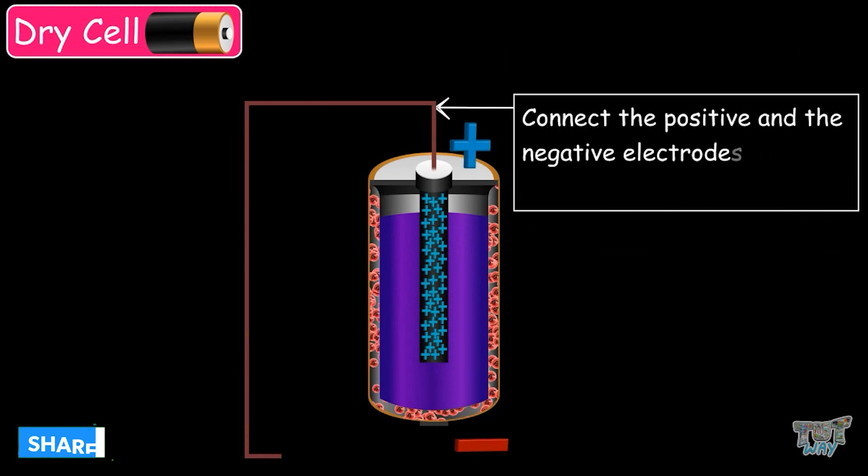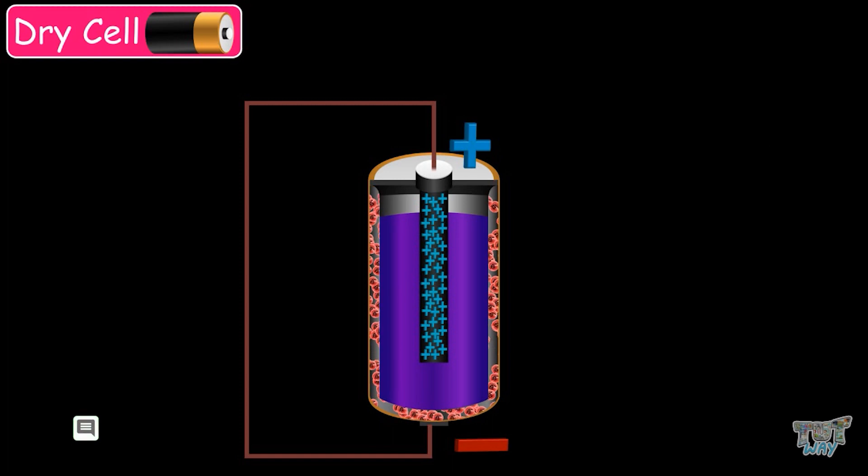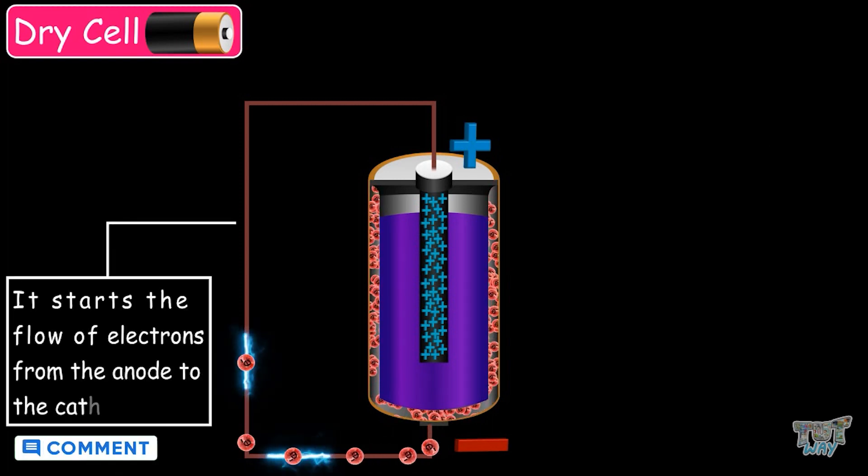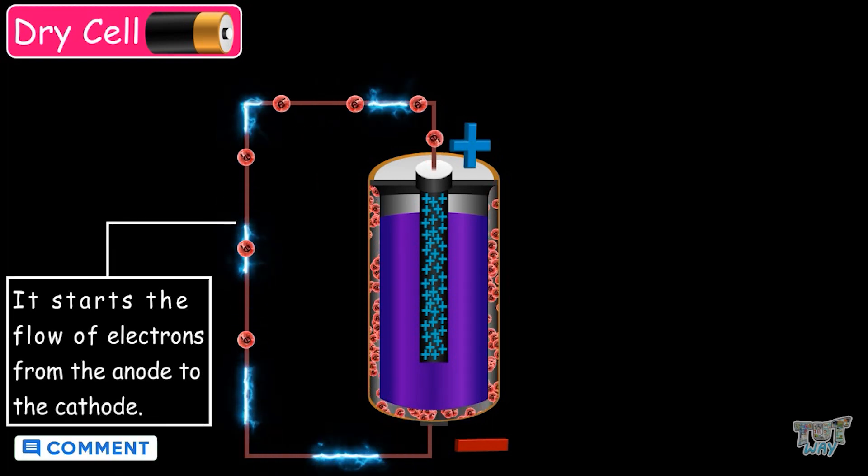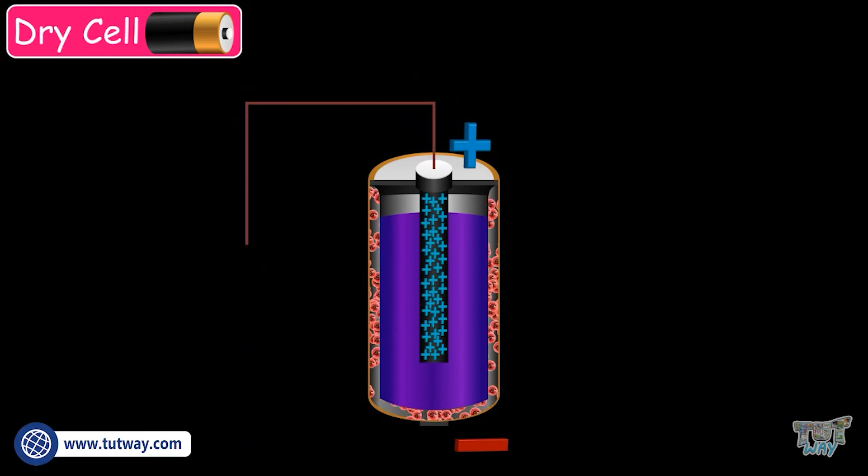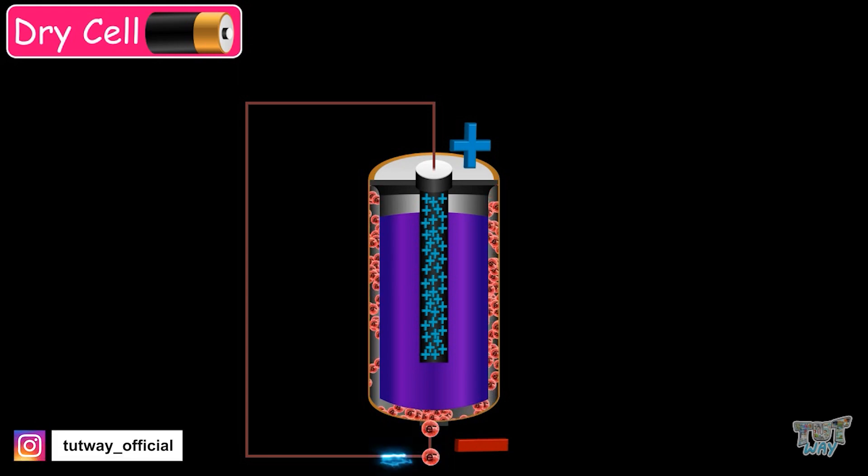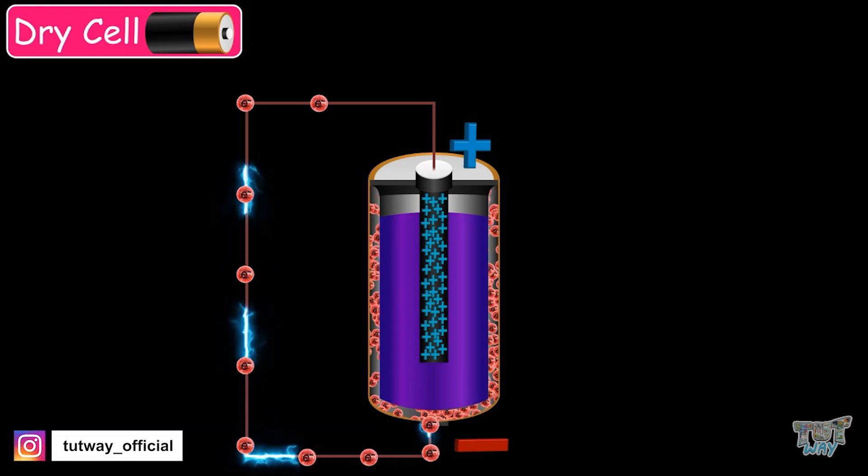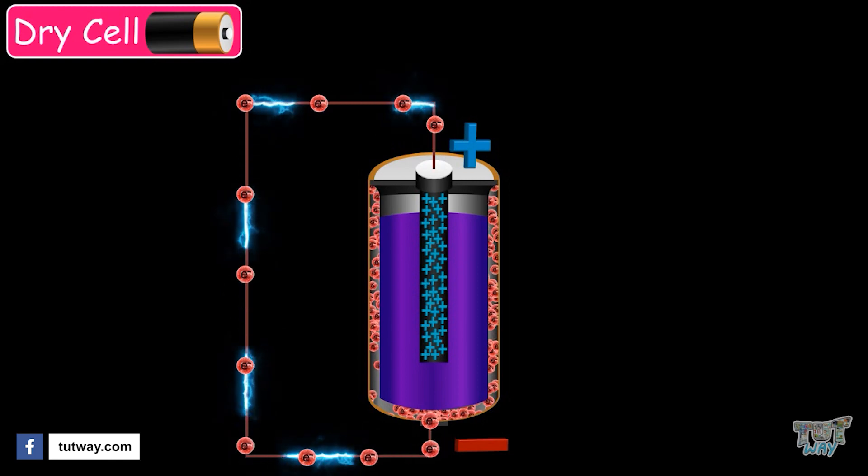So, we need to connect the positive and the negative electrode with the help of some conducting wires. And the flow of electrons starts from the anode to the cathode. This is why we attach a conducting wire from the anode to the cathode. And the electrons start flowing from the negative electrode towards the positive electrode, through the conducting wire.